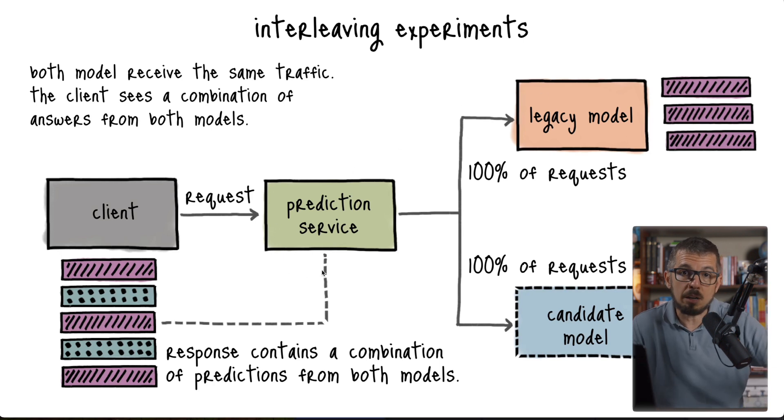Now we're generating recommendations using both models and interleaving those recommendations in a response. The client will not see recommendations from just the legacy model or just the candidate model, but recommendations from both models at the same time. We interleave maybe one recommendation from the legacy model, one from the candidate model, one from the legacy model, one from the candidate model, then one from the legacy model to complete the five recommendations. This gives us a couple of good things.